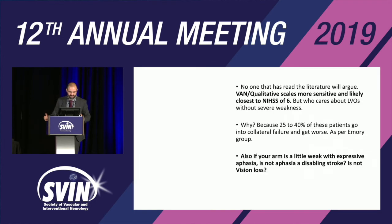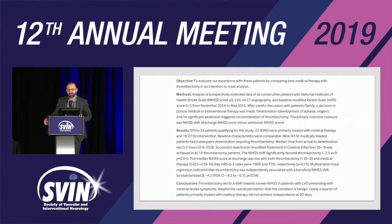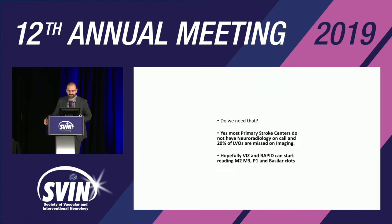People tell me the qualitative scales pick up more, but who cares about NIHSS less than 10 — those patients probably have good collaterals. The Emory group showed that's not the case: 40–50% of patients with low NIHSS and LVO go into collateral failure. That's exactly why the ENDO-LOW study exists — we don't know yet. We have to identify these patients, whether at primary stroke centers or in the field.